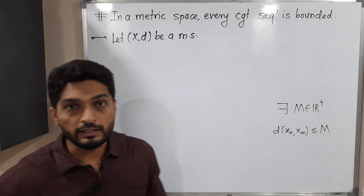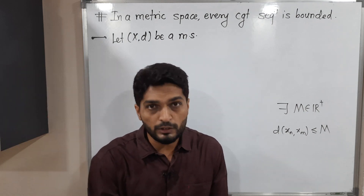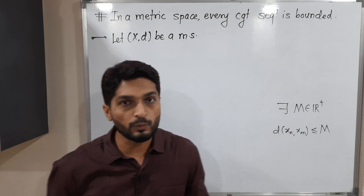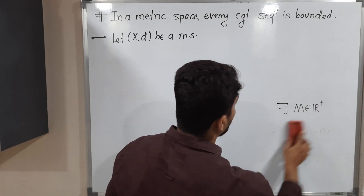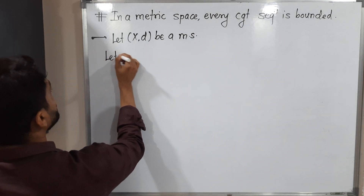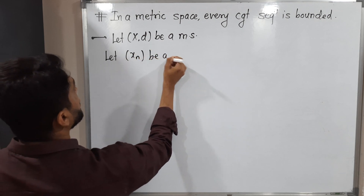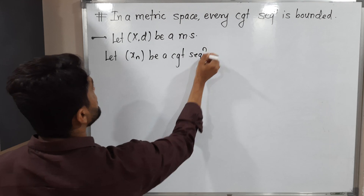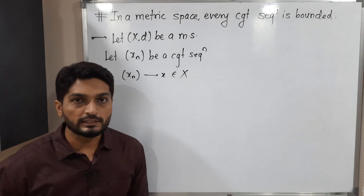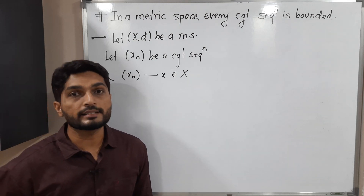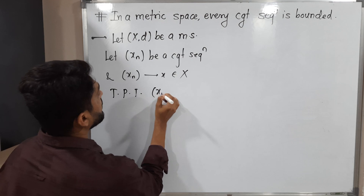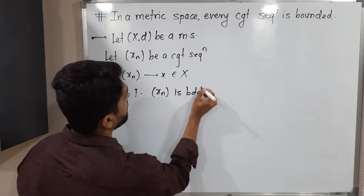We will consider any arbitrary metric space. We take any sequence which is convergent, and our target is to prove that d(xn, xm) is less than some positive real number. Let xn be a convergent sequence and xn converges to x. We have to prove that xn is a bounded sequence.